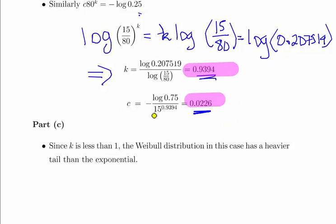K we estimate to be 0.9394. C we estimate to be 0.0226. And that's really the job done. So just in a nutshell, what helped there a lot was just knowing how to do logarithms. Always remember that basic stuff.